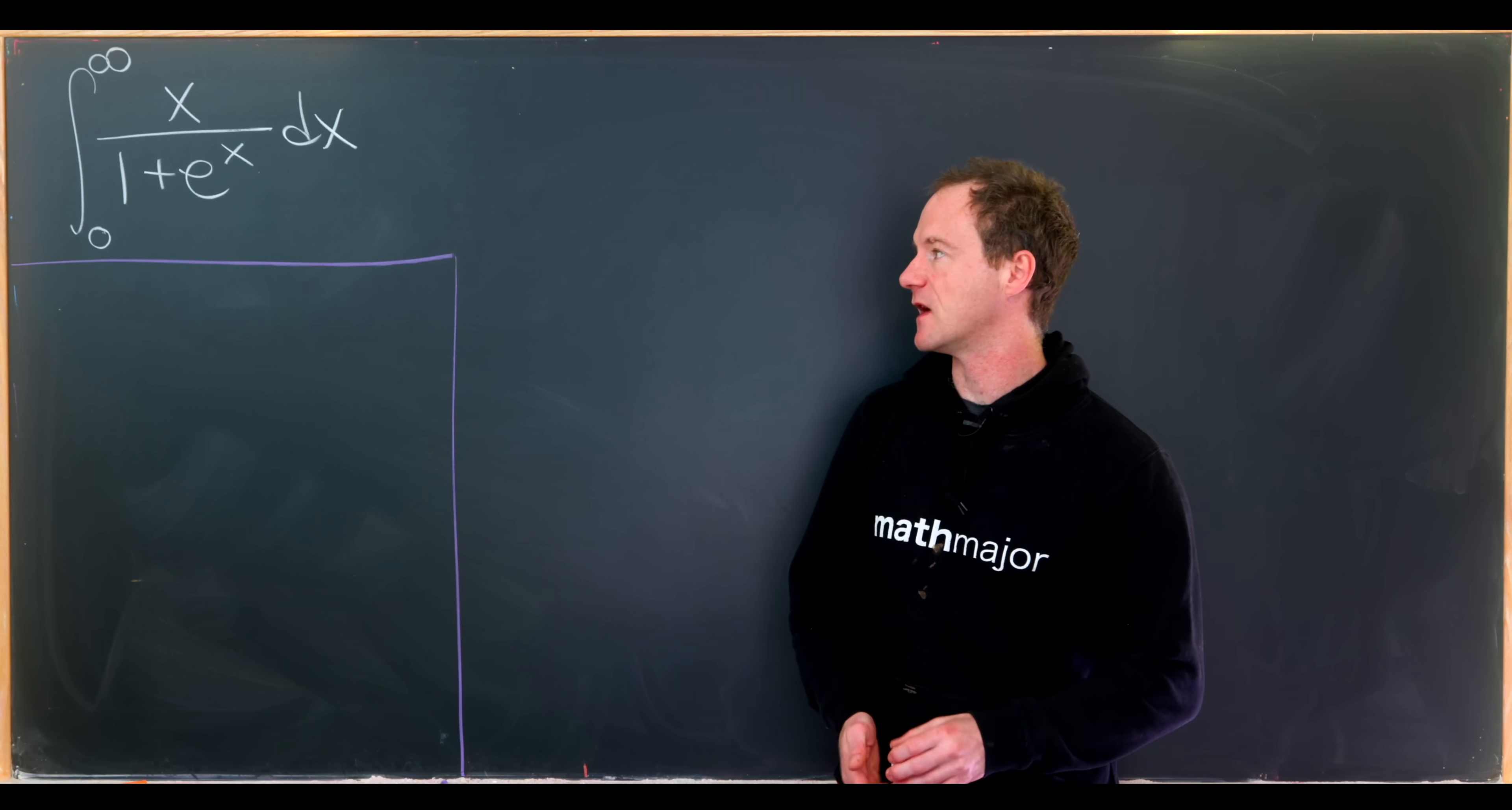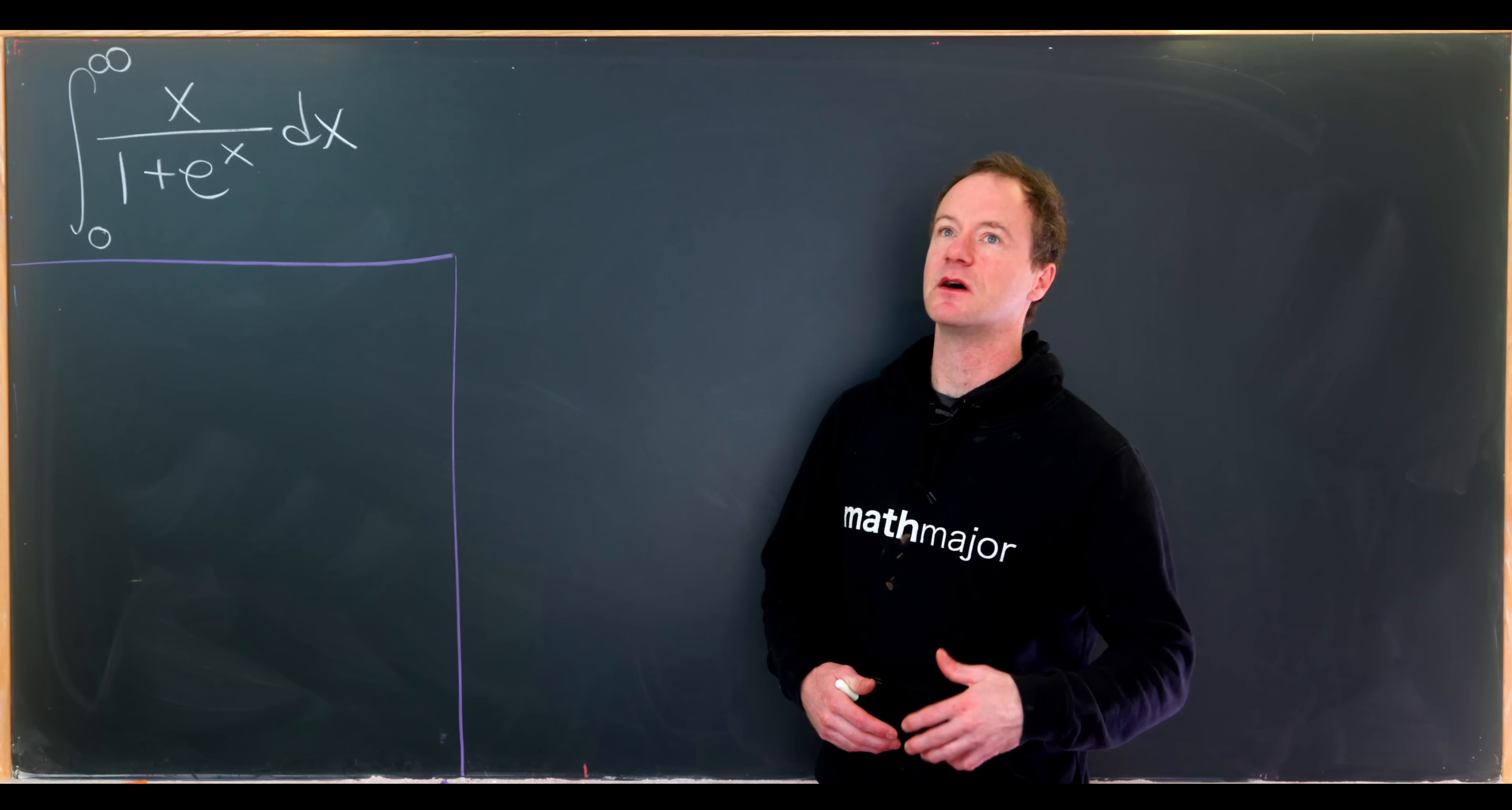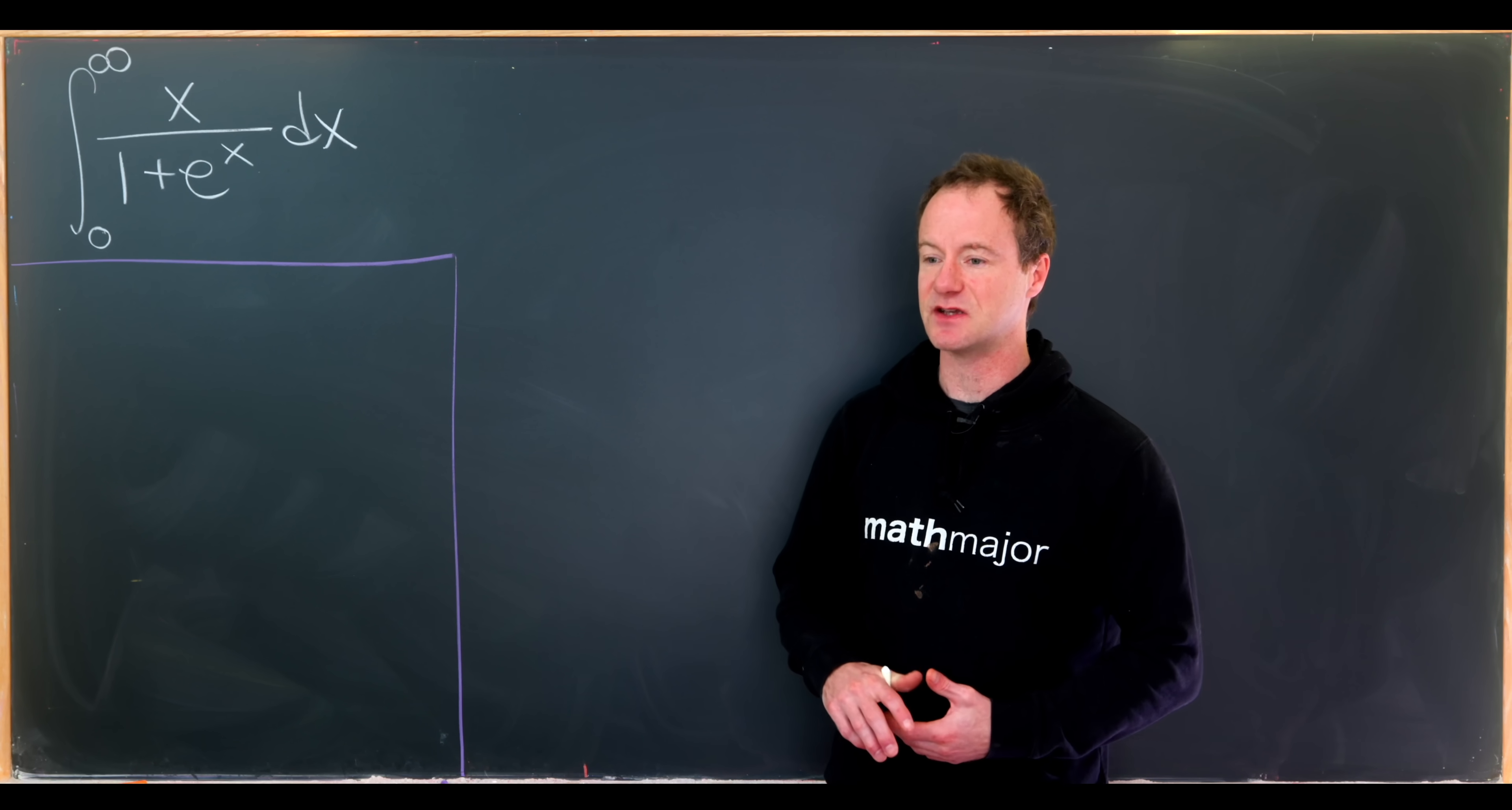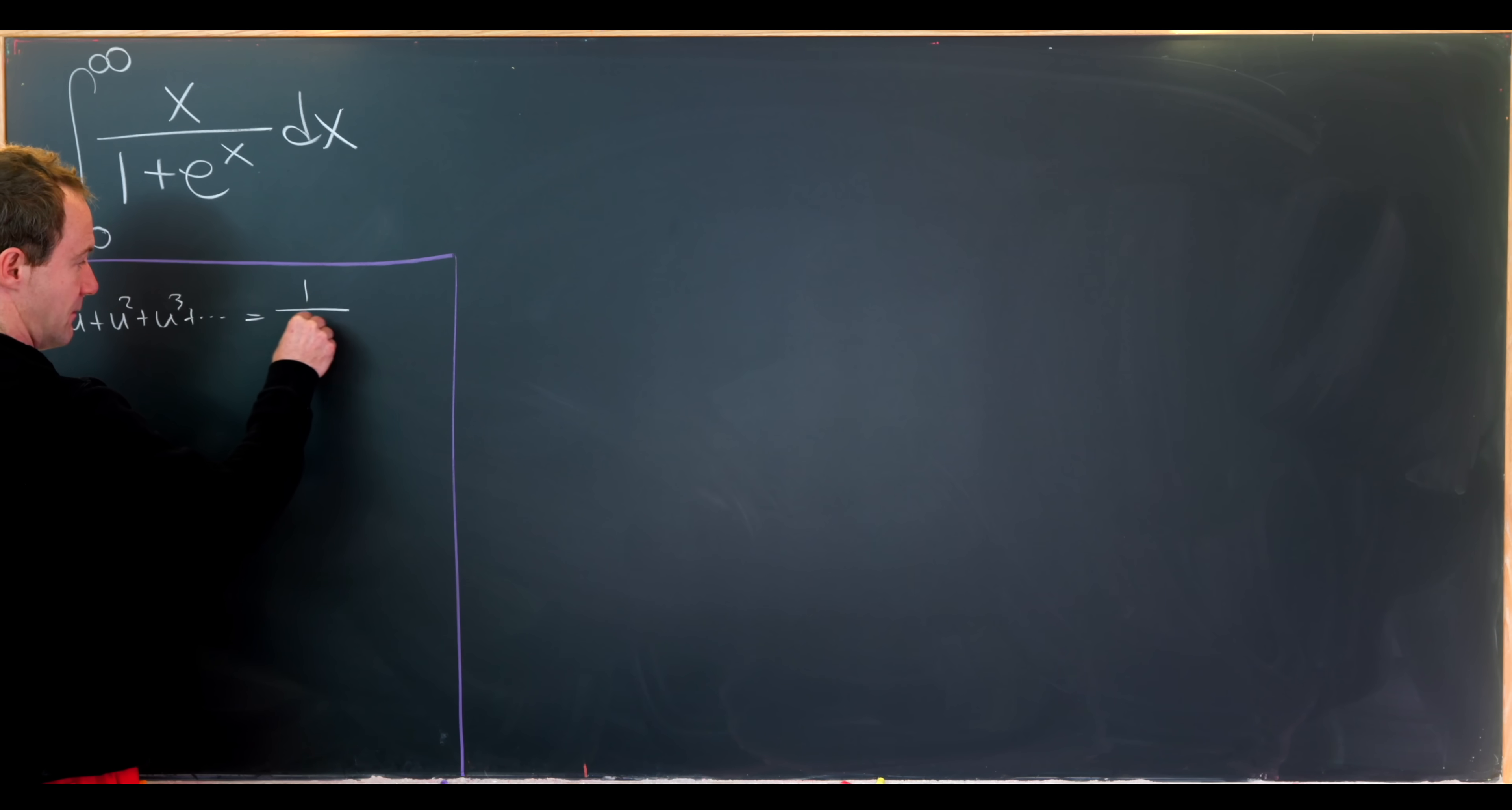So let's see what we have. Our goal is to find the integral from zero to infinity of x over one plus e to the x. And looking at this, the immediate motivation would be to expand this using a geometric series as one over one plus e to the x looks like a summed geometric series.